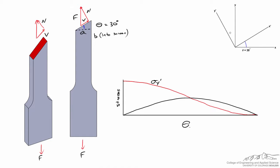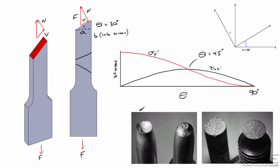Graphing the stresses as a function of theta: sigma_y-prime is largest at theta equals zero for the horizontal cut and decays to zero as theta approaches 90 degrees. Tau_y-prime-x-prime actually reaches a maximum at theta equals 45 degrees. This 45-degree angle has huge consequences for ductile materials, which tend to fail along directions of maximum shear stress. The fact that normal stress is largest at theta equals zero has huge consequences for brittle materials, which tend to fail along directions of maximum normal stress. The material doesn't know which direction we've defined as 45 degrees. When you pull apart a ductile material, you see a 45-degree angle in essentially all three directions — a cup-and-cone type failure, as shown in these pictures.